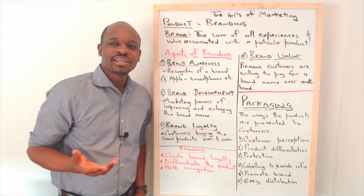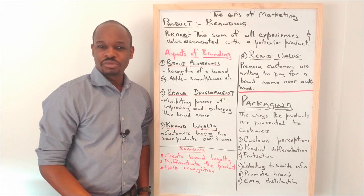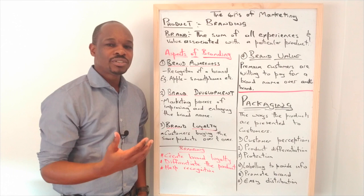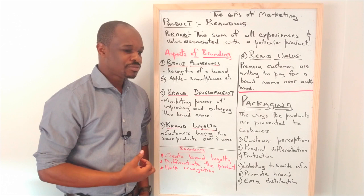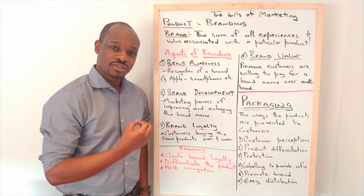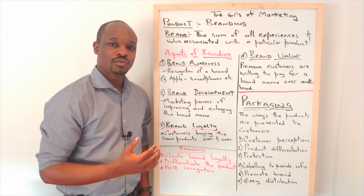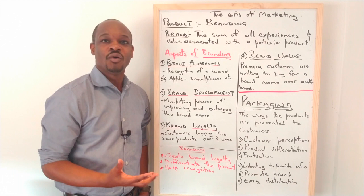What is a brand? Because I know you've probably heard about brand and branding before. Simply put, a brand should be the sum total of all the experiences and value associated with a particular product. We can also look at the brand in terms of a symbol — we know the Swoosh for Nike — and there are different symbols that, once you see them, you will know what the brand is all about.